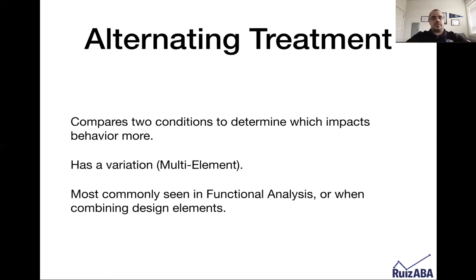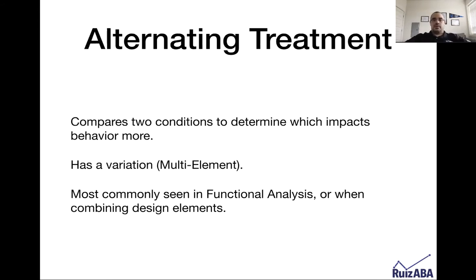Essentially, what an alternating treatments design does is it compares two conditions to determine which impacts behavior more. When I say alternating treatment, that means it could also apply to behavior that you're looking to increase and you want to know which has a greater effect. You would alternate the order in which the treatment is delivered, and you want to see which one does a better job of changing the behavior.